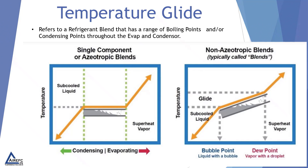Temperature glide refers to a refrigerant blend that has a range of boiling points and/or condensing points throughout the evaporator and condenser. The diagram on the left shows single component or azeotrope refrigerants, which have the same temperature between their subcooled liquid and superheated vapor states. On the right, non-azeotrope blends show a glide — a range of temperature between the subcooled liquid and the superheated vapor where the refrigerant is either boiling off or condensing back into a liquid.